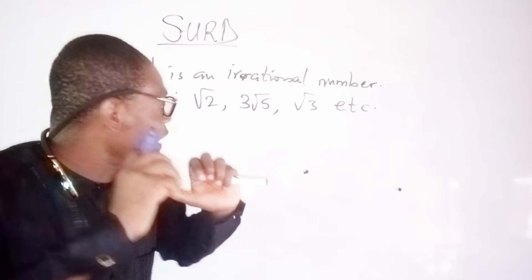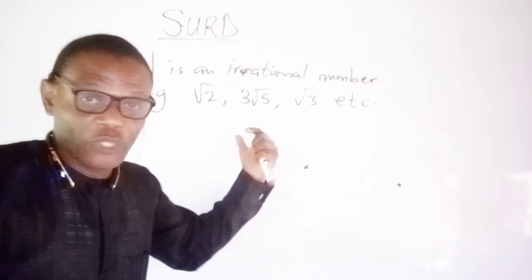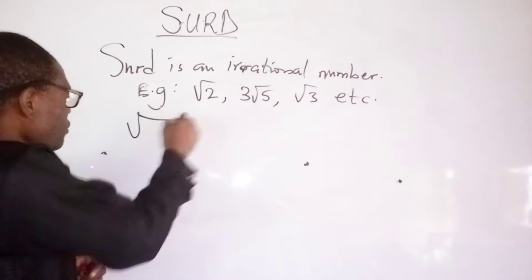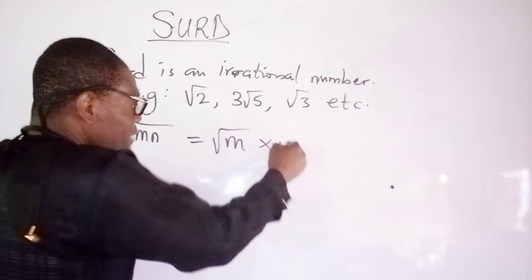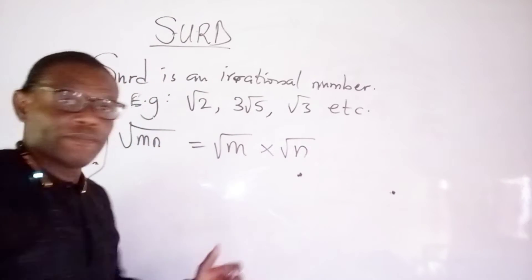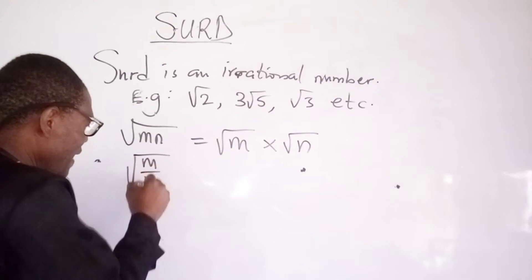Now, there are rules for surds. If I have square root of m n, it can also be square root of m times square root of n. If I have square root of m over n,